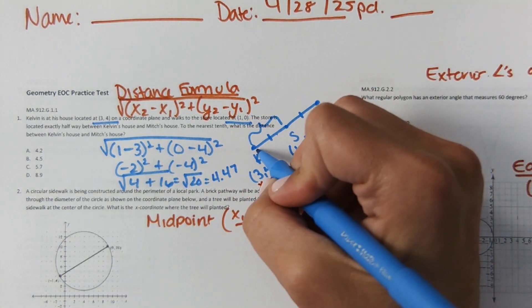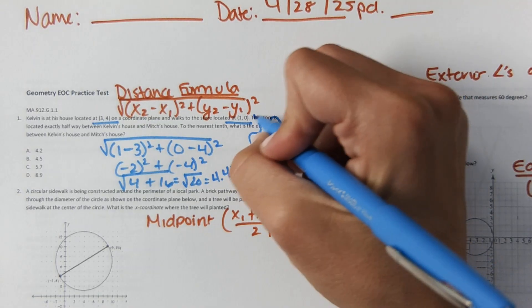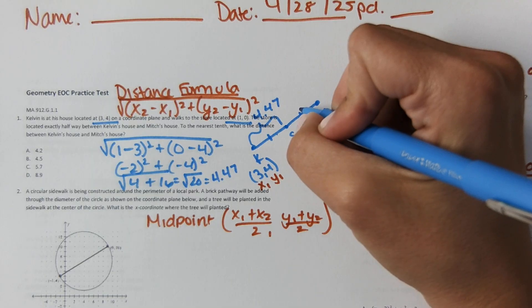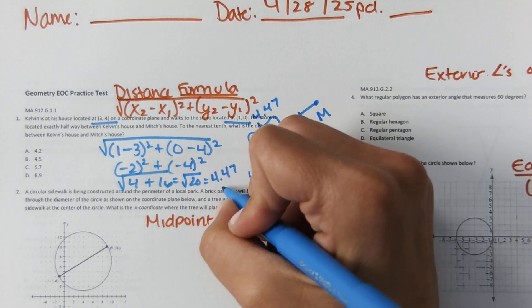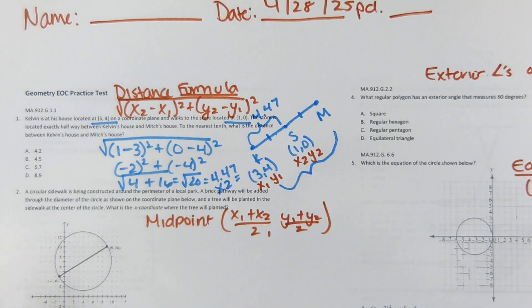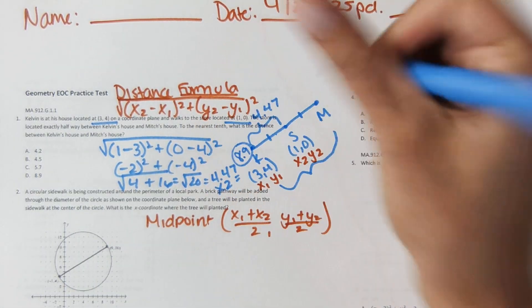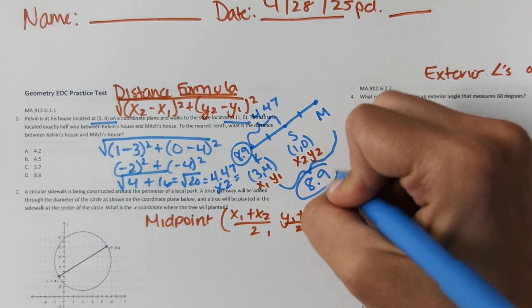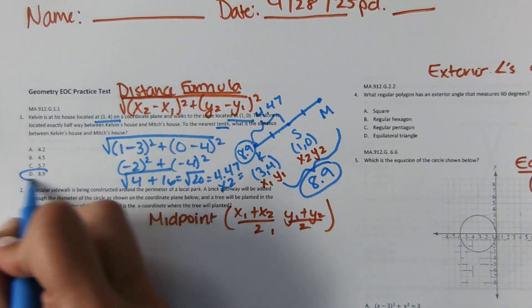That distance of 4.47 miles is between Kelvin and the store. Since we need the full distance from Kelvin to Mitch's house, we multiply 4.47 by 2, which equals 8.94 — rounded to the nearest tenth that's 8.9, so the answer is D.